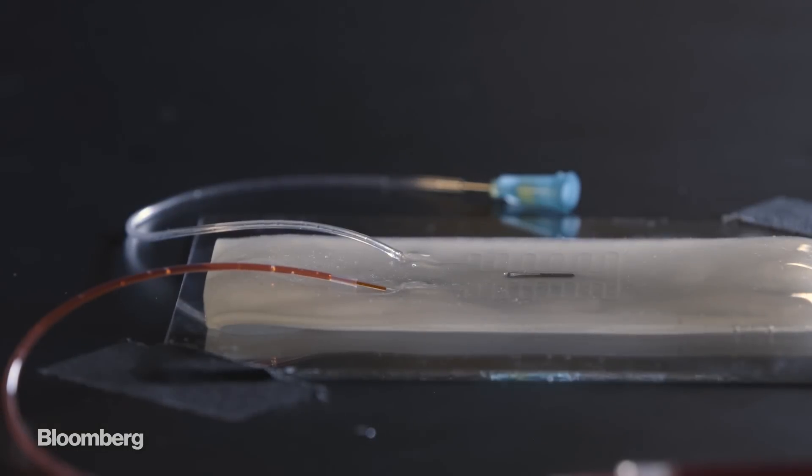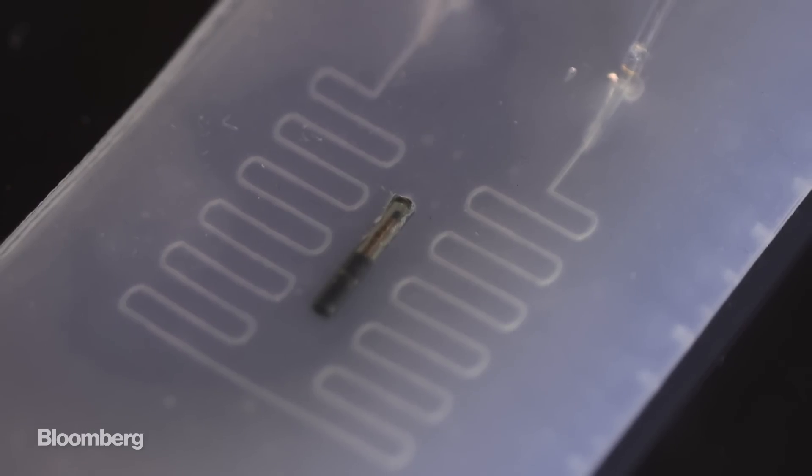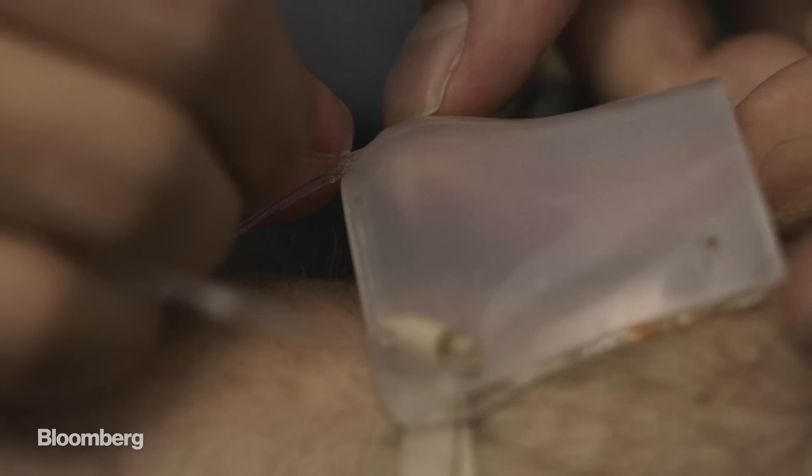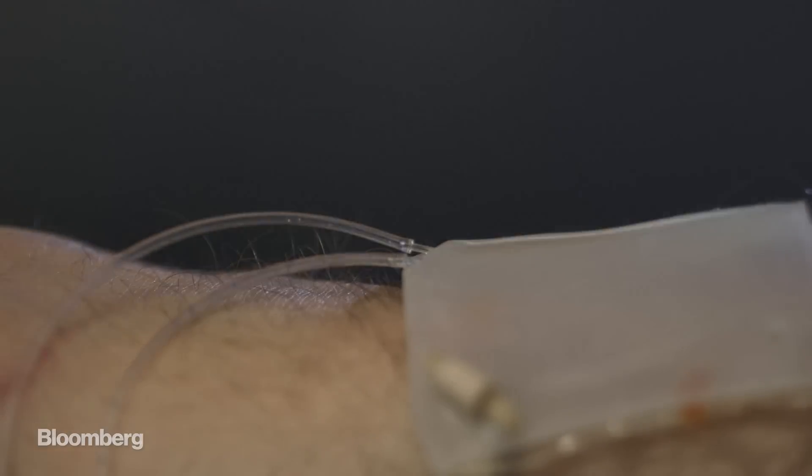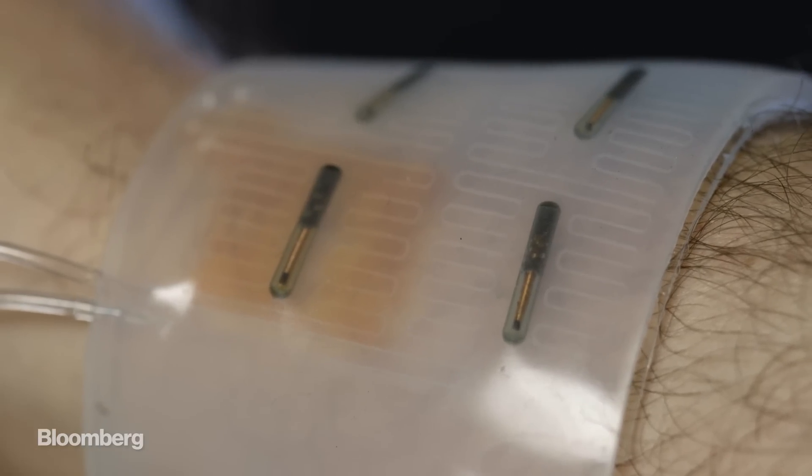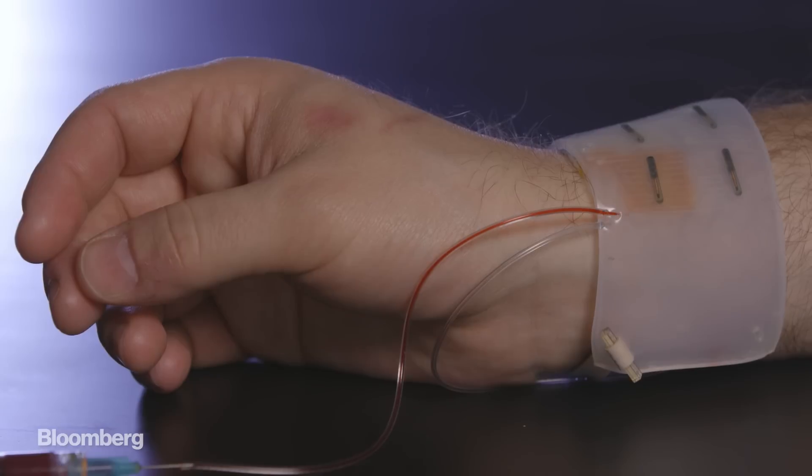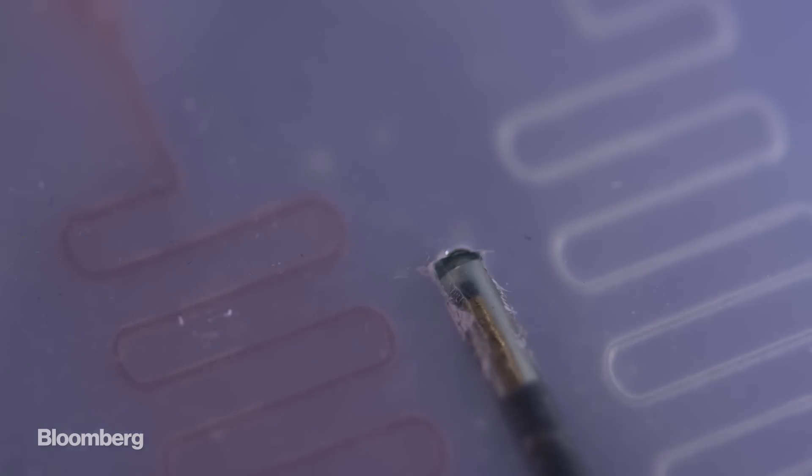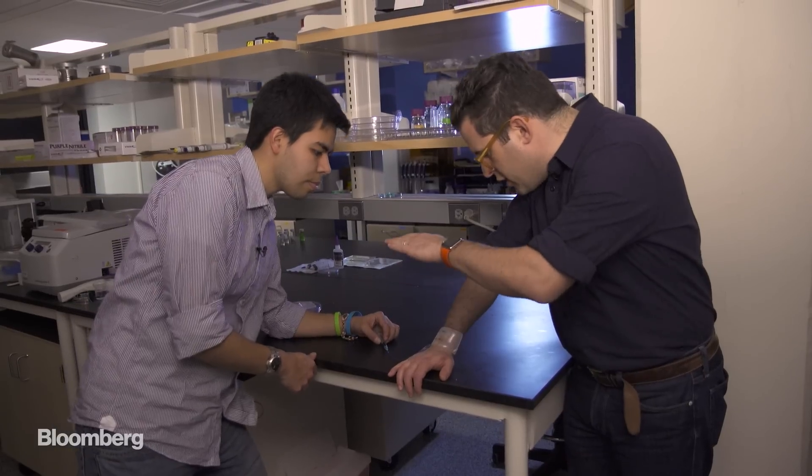To demonstrate a simple use of the gel, Xuanhe developed a prototype for a smart bandage. So this is like a super band-aid. Yes. That would deliver medicine. Right, that's correct. So the idea is that this will sense something, either temperature, chemicals, or if you have an infection. So if I needed an antibiotic, what might that look like? So for example, you see it flowing. I see it coming in.